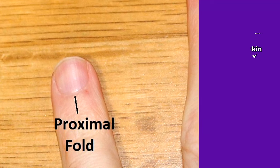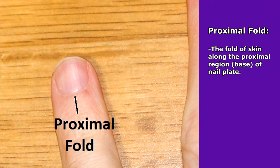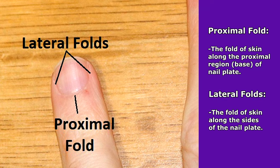You also have folds of skin that surround the nail plate. The proximal fold is the fold of skin near the proximal end, or the origination point, of the nail plate — right along the bottom of the nail. The lateral folds lay on each side of the nail plate.